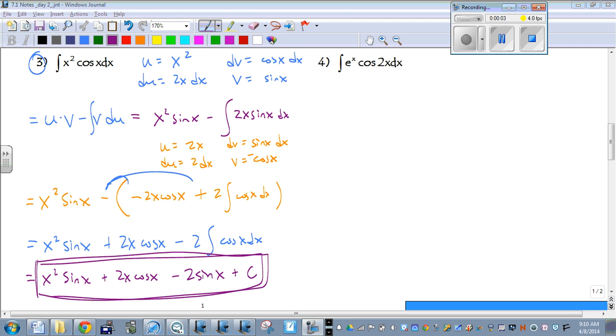So number three is similar to number two. Our u is going to be x squared, dv is cosine of x, du then is 2x dx, and the antiderivative of cosine is sine for our v.